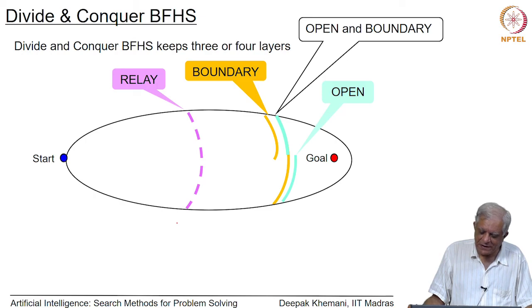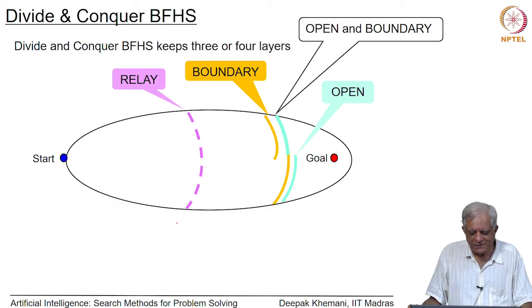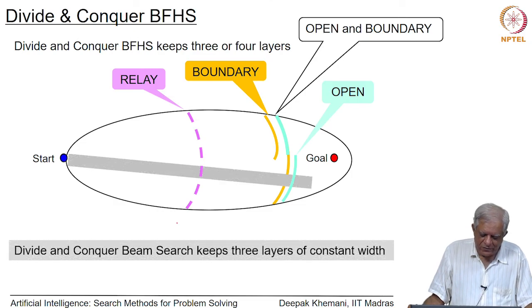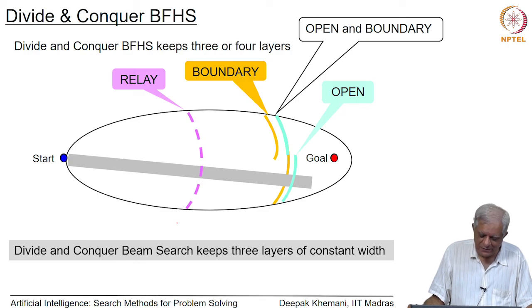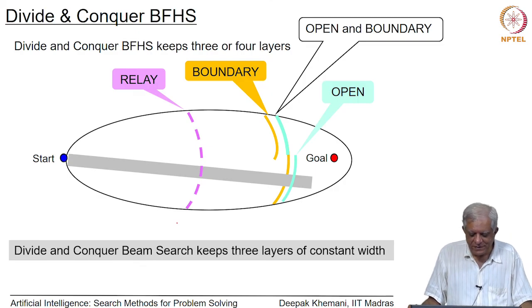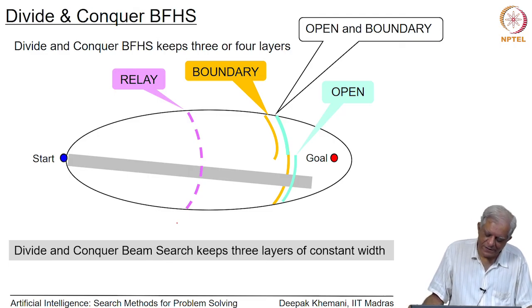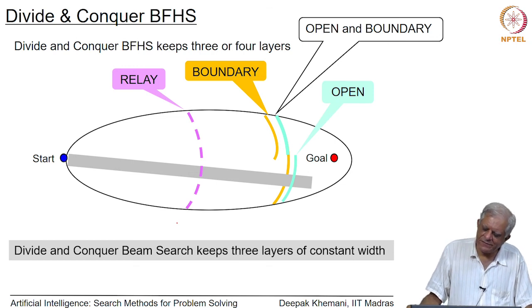If we combine pruning closed and pruning open, we do not have to keep the entire closed list for breadth-first heuristic search. We keep only a boundary layer and a relay layer as we did for earlier algorithms, at the expense of having to reconstruct the path again. Similarly, divide-and-conquer beam search keeps only three layers of constant size: one for open, one for the boundary, and one for the relay node. These divide-and-conquer versions of breadth-first heuristic search and beam search prune both open and closed. But let us first try to see whether we can make beam search more explorative so that it finds the optimal path.